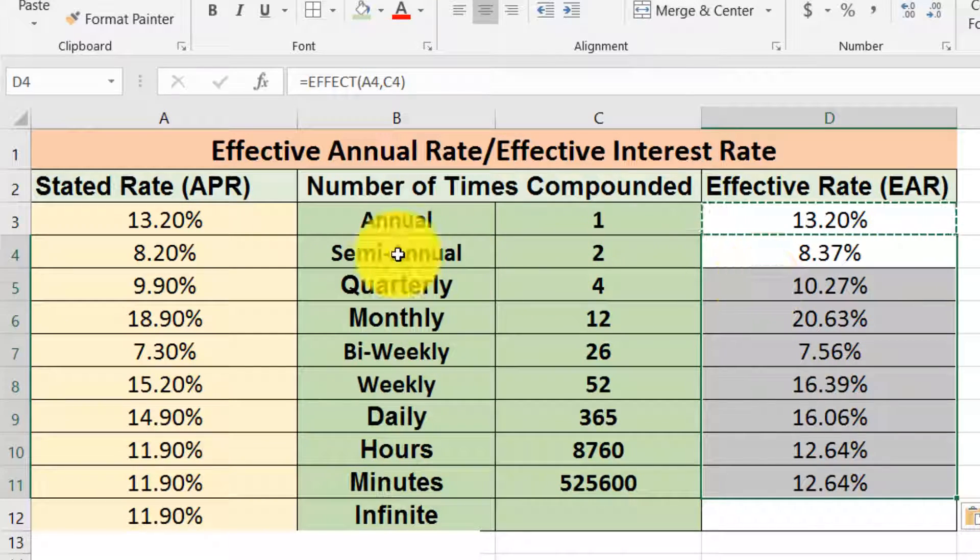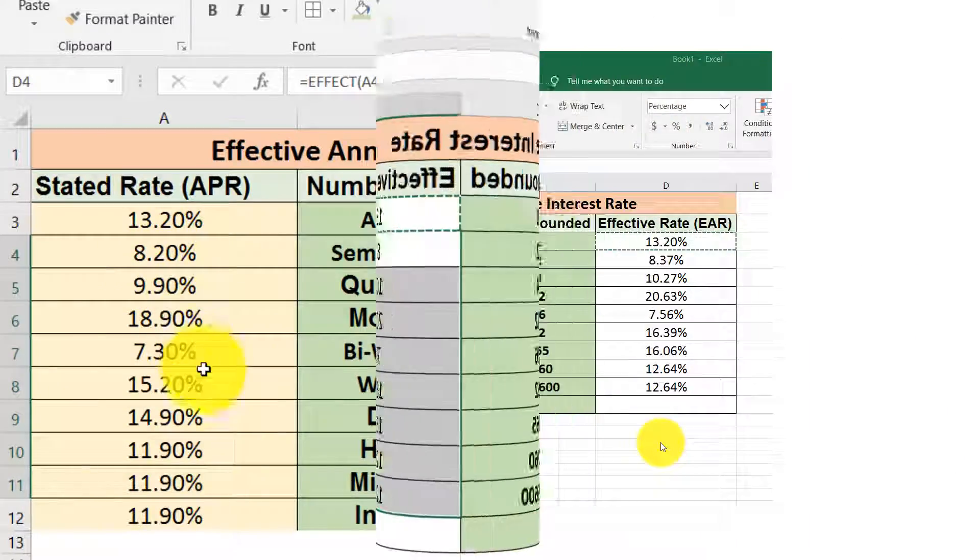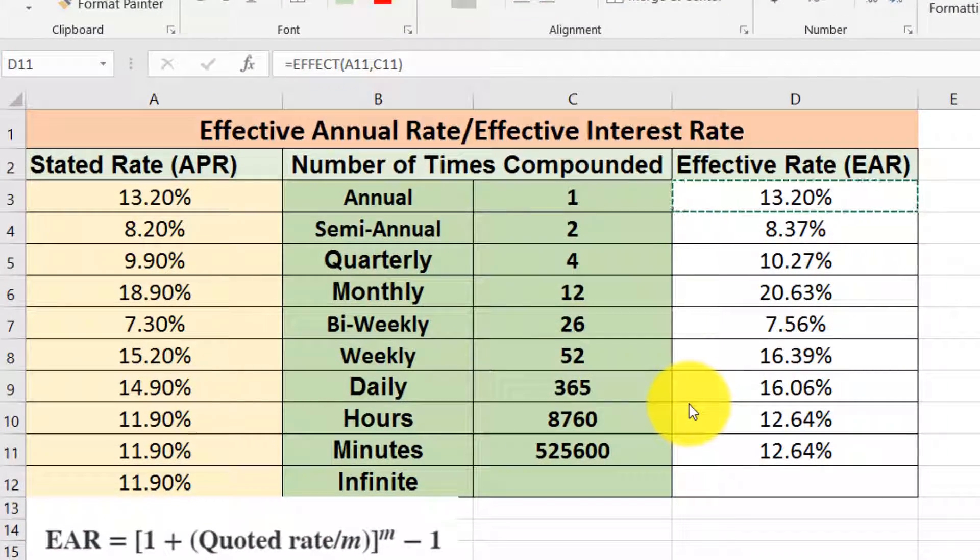Here you note one important point. For the calculation of the effective interest rate, you need two things: first is the nominal rate, sometimes we say annual percentage rate, and second is the number of time compounding. Then we are able to calculate the effective interest rate in this situation if we know the number of compounding. But in case of infinite, we cannot use this formula to calculate the effective interest rate in Excel.